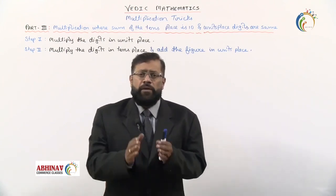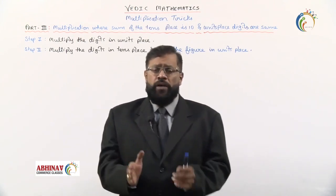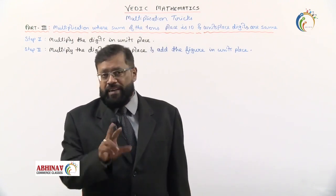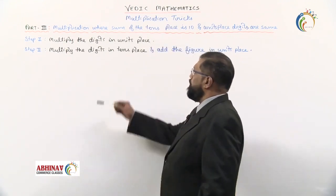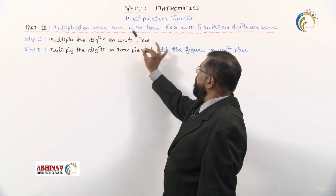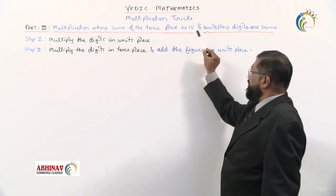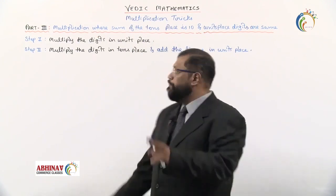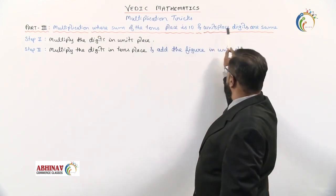In the last session we learned the multiplication tricks as per Part 2. In this session we shall take up Part 3 for multiplication tricks. Let's see what Part 3 says: multiplication where sum of the tens place is 10. In the last it was units place was 10 and units place digits are same.